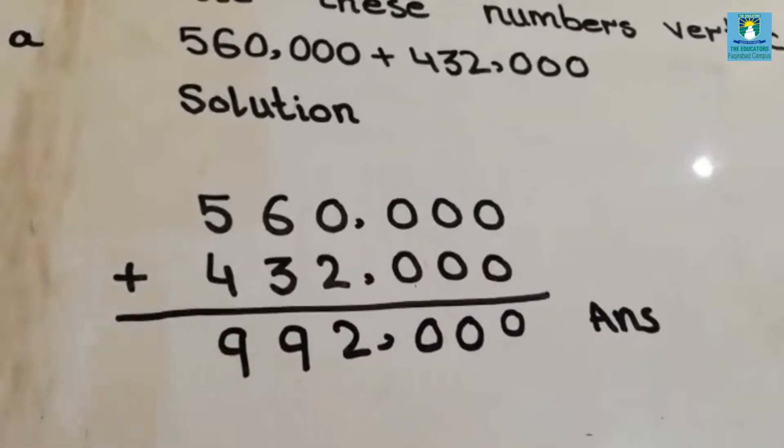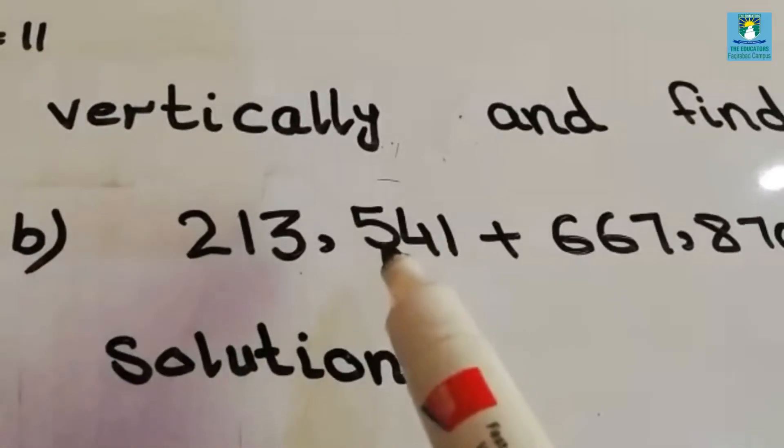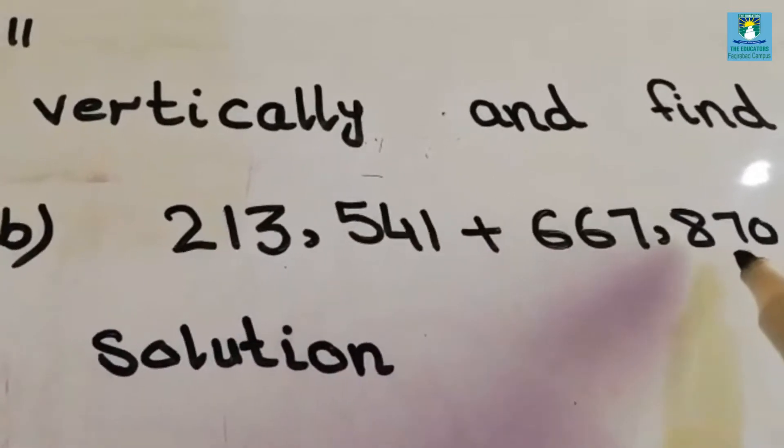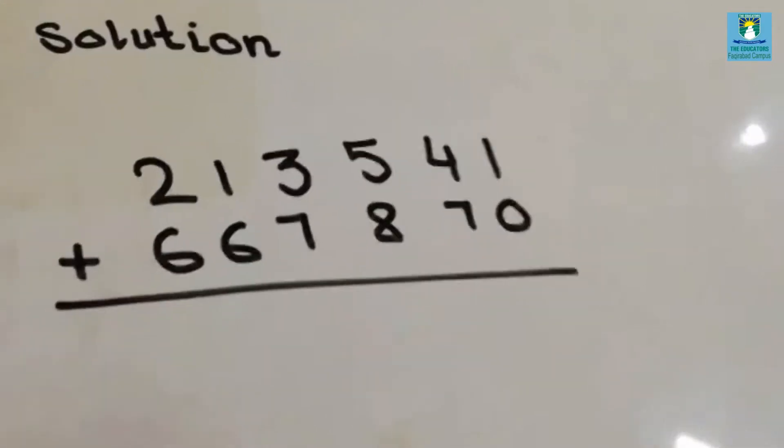Move to next part. Part B is 213,541 plus 667,870. First we will write the numbers vertically.